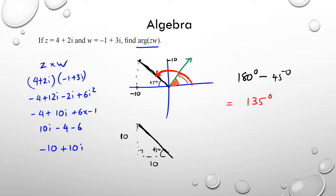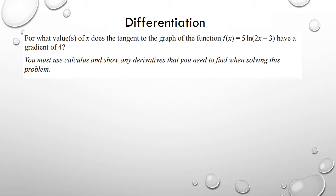Moving on to the next question: differentiation. We have, for what values of x does the tangent to the graph of the function have a gradient of four? The first thing we want to do is figure out what f dash of x is. So f dash of x in this case, we've got five ln of 2x minus 3. When we differentiate this, we're going to get five over 2x minus 3 multiplied by the differentiation of whatever's in the bracket, which is two. So our gradient function is 10 over 2x minus 3.